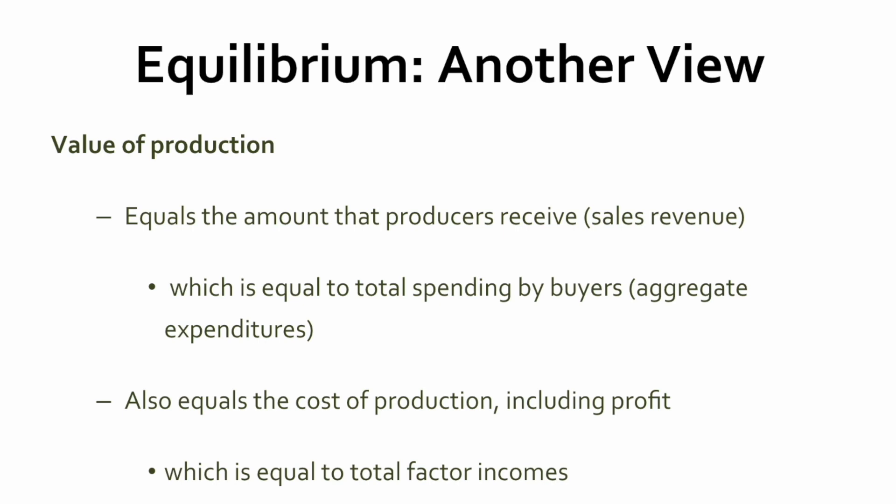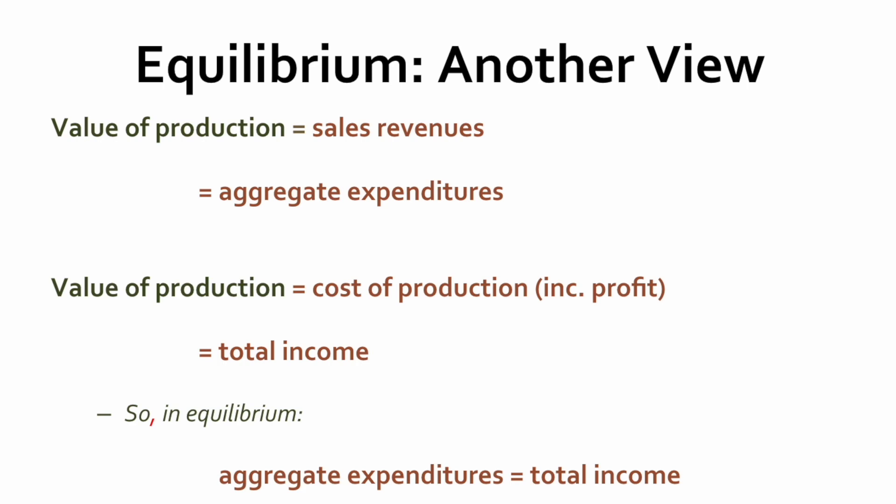We can also look at this from another perspective in terms of the value of production. Producers receive revenues as they produce and sell product, and those revenues should be the same as how much buyers are spending. So the household unit, in equilibrium, spends money to buy goods and services, and that will match the amount of goods and services that producers are producing. The value of production is really the total sales. Aggregate expenditures — all the stuff that people spend on — is going to match all the money that goes into businesses making stuff. So aggregate expenditures will equal total income at equilibrium.